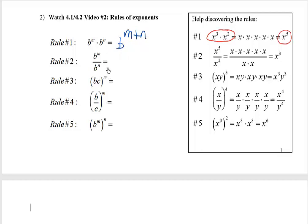Let's move on to rule number 2. This is a very similar situation. It's just that now, instead of multiplying, we're dividing the two items. That's what the fraction bar indicates. So this is b to the m divided by b to the n. Again, over in the sample area, I made up a simple problem, x to the fifth over x squared.